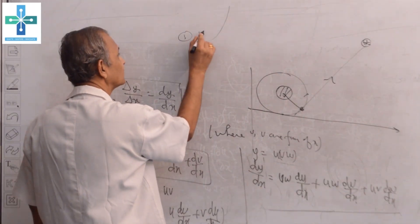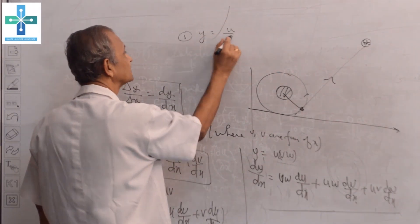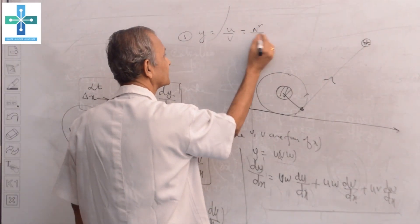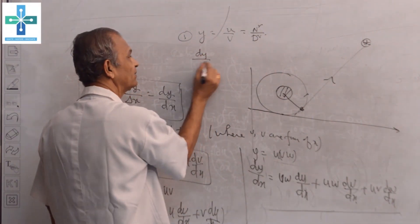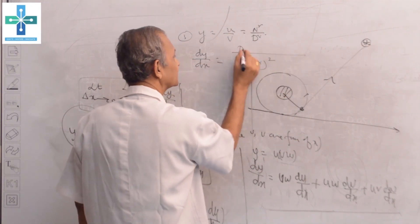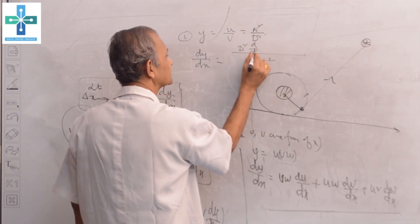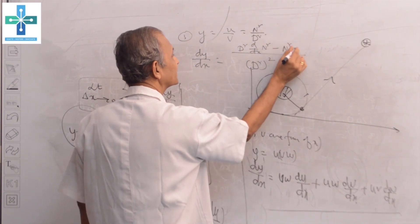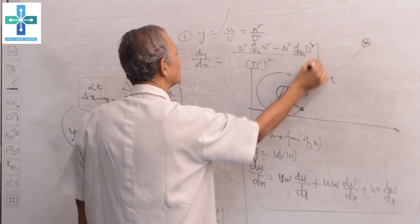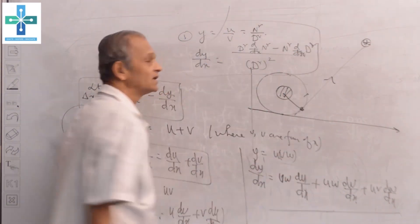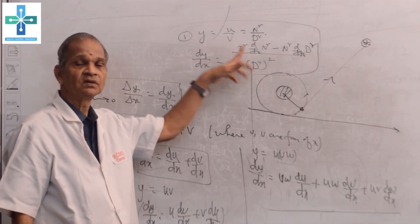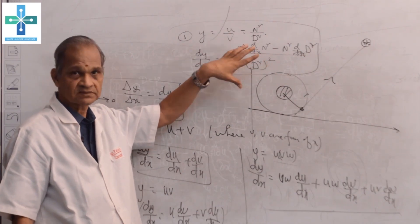Number three: when y equals u by v, this is what we call the quotient rule — numerator by denominator. Our dy by dx formula is: denominator squared in the denominator, then denominator times d by dx of numerator minus numerator times d by dx of denominator. This formula we apply. We can also take log for this, but there exists this direct formula we can use.